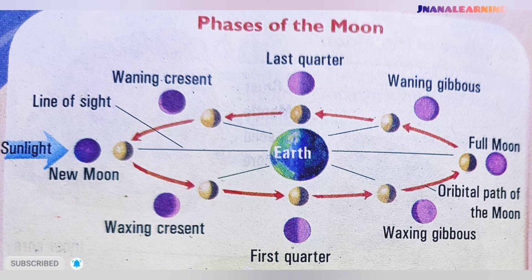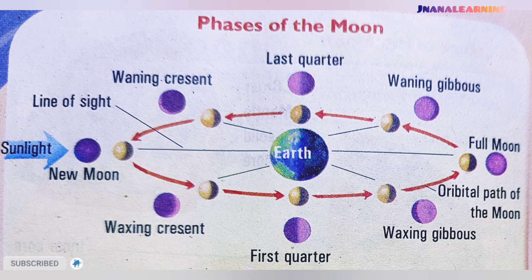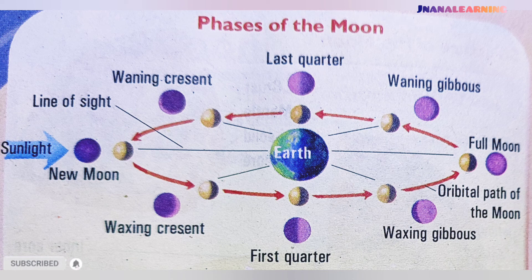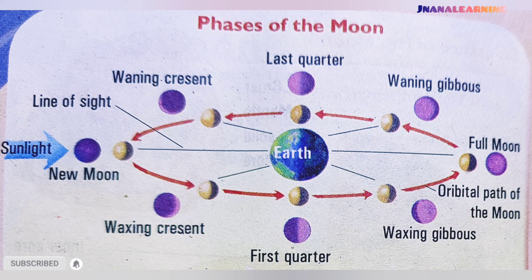When the moon seems larger than half of a full moon, it is called a gibbous, and when it seems smaller than half of a full moon, it is called a crescent. The moon changes its shape step by step in about a month's time.